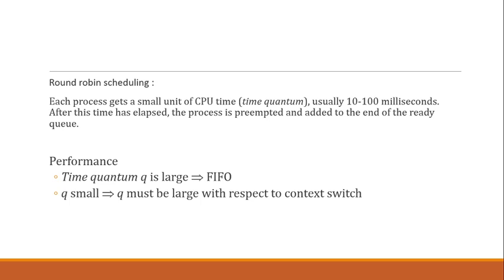If time quantum is very large, execution is the same as FIFO. If time quantum is too small, there are too many context switches. For example, if time quantum is 1 and a process requires 20 units, it requires 20 context switches. We need to define time quantum to minimize overhead while still giving fair chances. An intermediate value is best. For example: if a process requires 10 units and TQ = 12, no context switch is needed. If TQ = 6, one context switch is needed. If TQ = 1, nine context switches are needed.